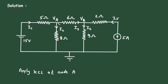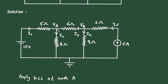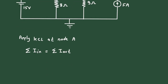Its name is node A and its voltage is Va. According to KCL — Kirchhoff's current law — the summation of all the currents entering a node is equal to the summation of all the currents leaving the node. Here, the entering current is I1, while I2 and I3 are the leaving currents. So we can write: I1 = I2 + I3.